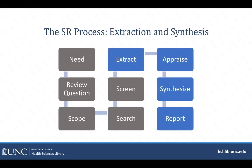At this point, you have identified the need for a systematic review on your topic, created a specific focused research question, finalized the scope of the review, and written the review protocol. You conducted a comprehensive search of the literature and screened all of the studies found. You now have the list of studies that meet all of your inclusion criteria, and you are starting to think about synthesizing those included studies in your final manuscript.